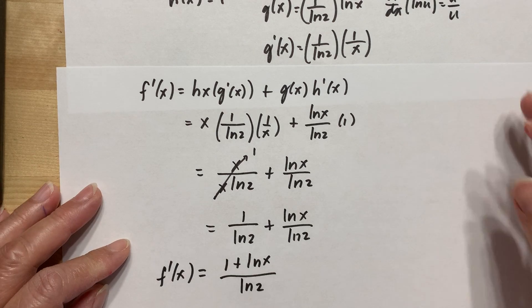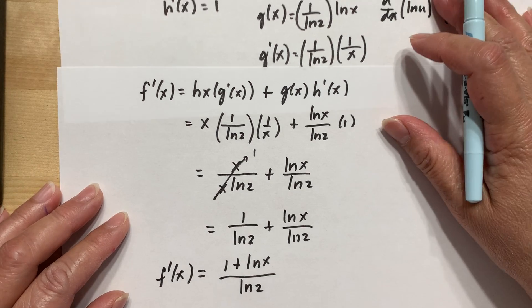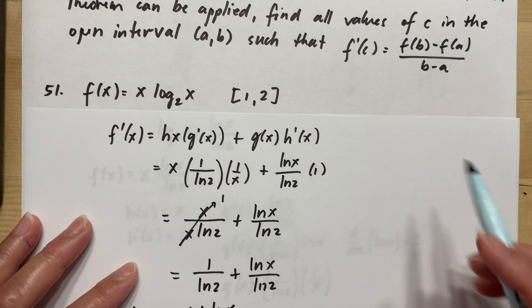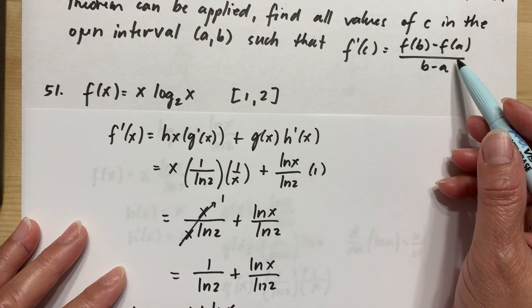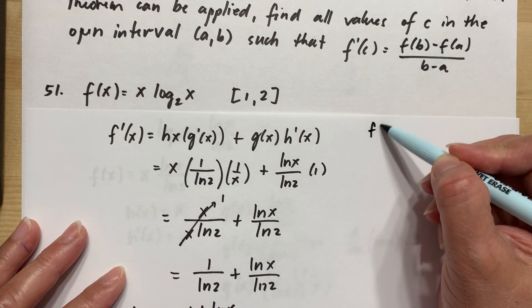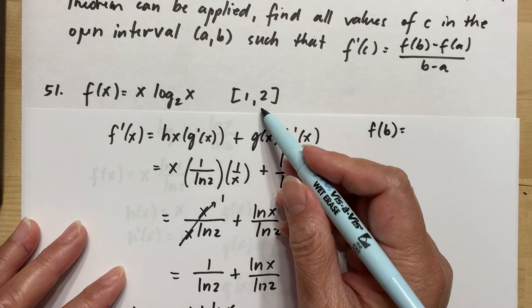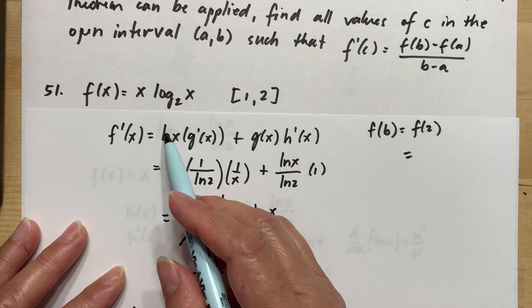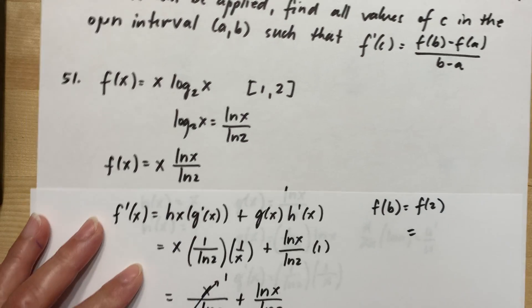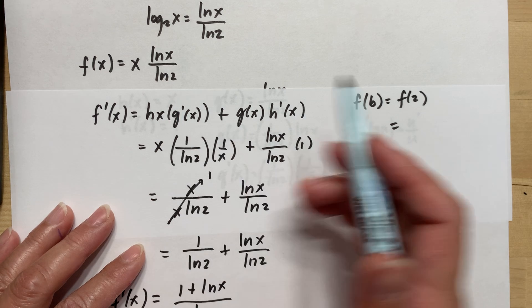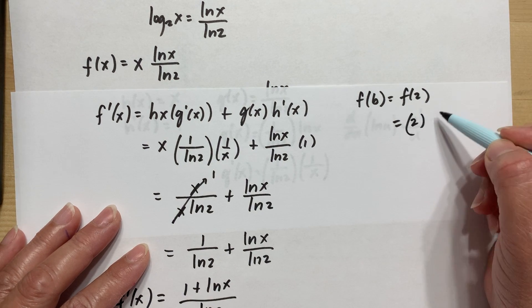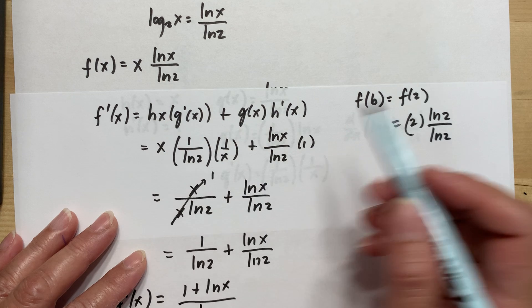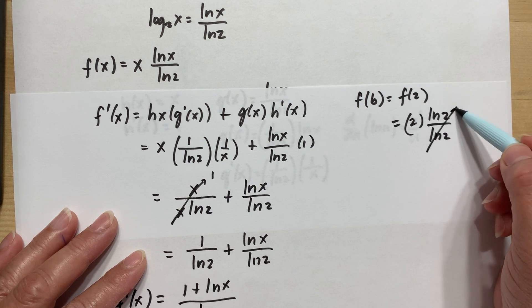Now we need to find f′(C) = [F(B) − F(A)] / (B − A). First, let's find F(B) where B = 2. Substituting x = 2 into x·ln(x)/ln(2), we get 2·ln(2)/ln(2). Since ln(2)/ln(2) = 1, we have F(2) = 2.